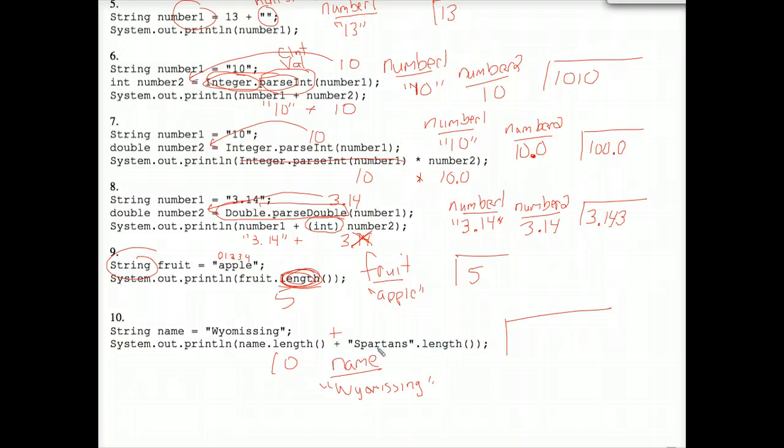This is legal. You can take a string literal, something in double quotes, and dot length it. Because it is a string, it's just not a variable. It's a string literal, we call it. So let's count the length of Spartans, 1, 2, 3, 4, 5, 6, 7, 8. So we have an 8 here and we have a 10 here. And neither thing is a string. This is a number and this is a number. So the final answer is 18.